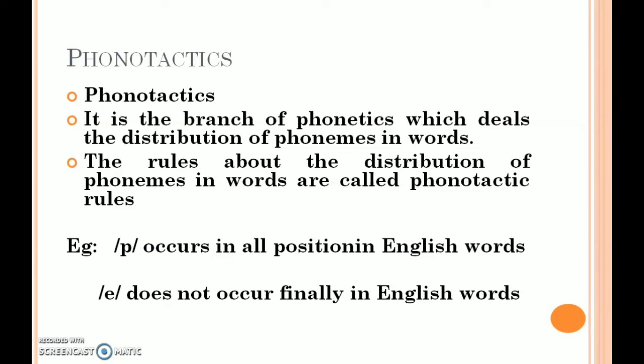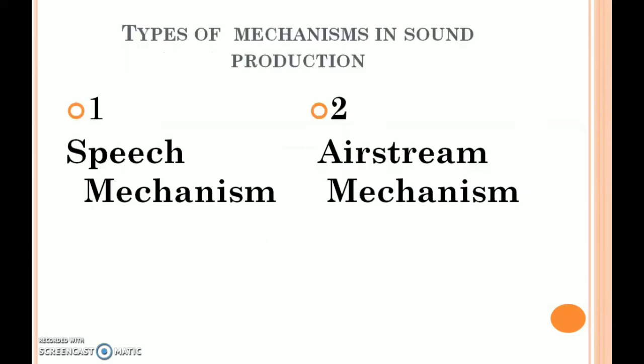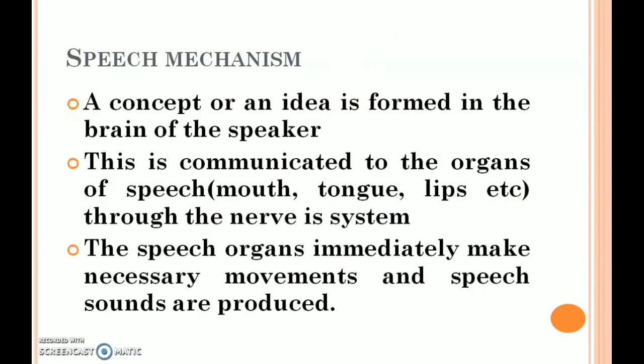For example, phonotactic rules specify which sounds occur in initial position, which occur in medial position, and which occur in final position in English words. There are two types of mechanisms in sound production: one is the speech mechanism, and the other is the airstream mechanism. What is the speech mechanism? A concept or idea is formed in the brain of the speaker. This concept is communicated to the organs of speech — mouth, tongue, lips, etc. — through the nervous system.